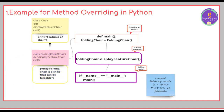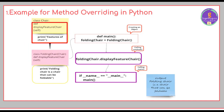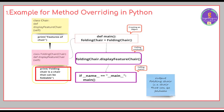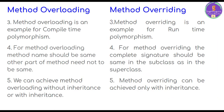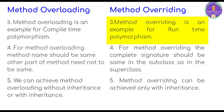FoldingChair is inheriting the Chair class. The Chair class has a method called 'display_feature_chair' with a print function outputting 'features of chair'. We want to change that implementation in the subclass from 'features of chair' to 'folding chair is a chair that can be foldable'. The third difference is: method overloading is an example of compile-time polymorphism, and method overriding is an example of runtime polymorphism.